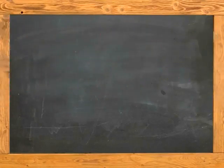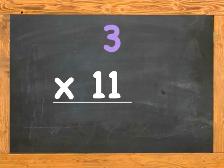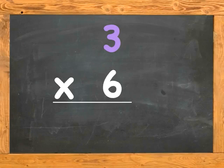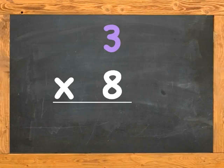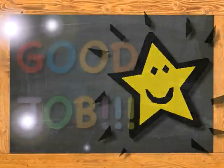Let's mix them up! 3 times 5 is, 3 times 10 is, 3 times 11 is, 3 times 9 is, 3 times 3 is, 3 times 6 is, 3 times 4 is, 3 times 2 is, 3 times 8 is, 3 times 12 is, 3 times 1 is, 3 times 7 is. All right!